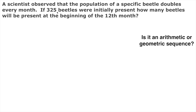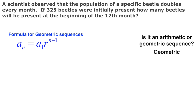So the first month is 325, the second month is 650. All we're doing is multiplying each one by 2. So this one is a geometric sequence, which helps us out quite a bit because we can use our formula for geometric sequences.